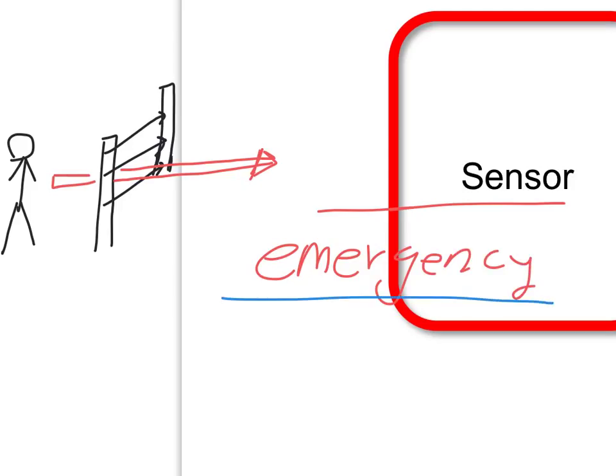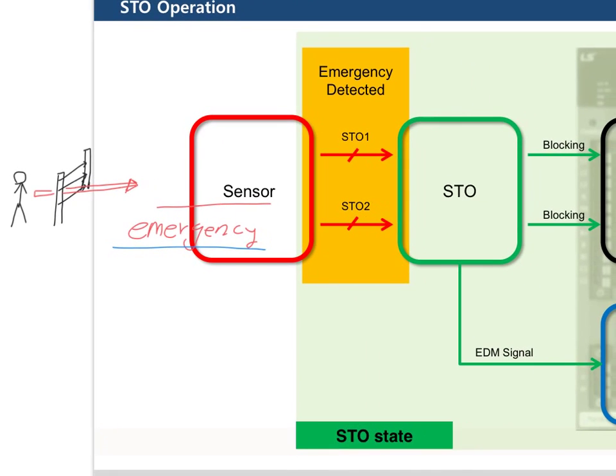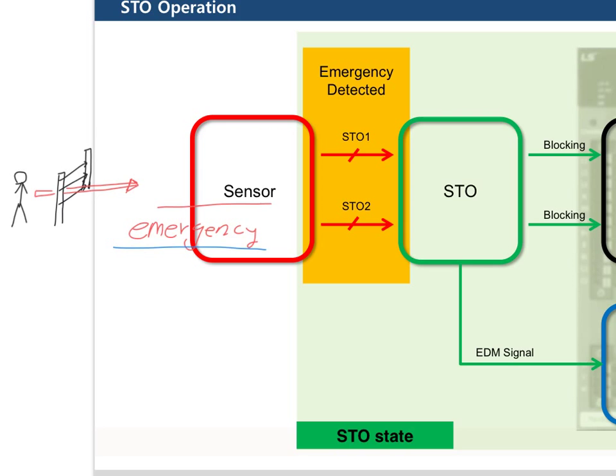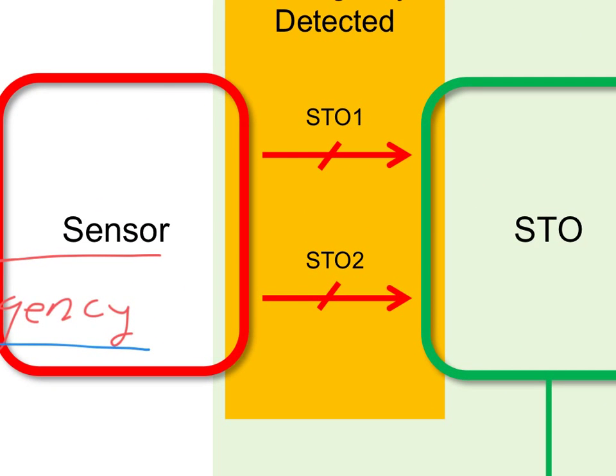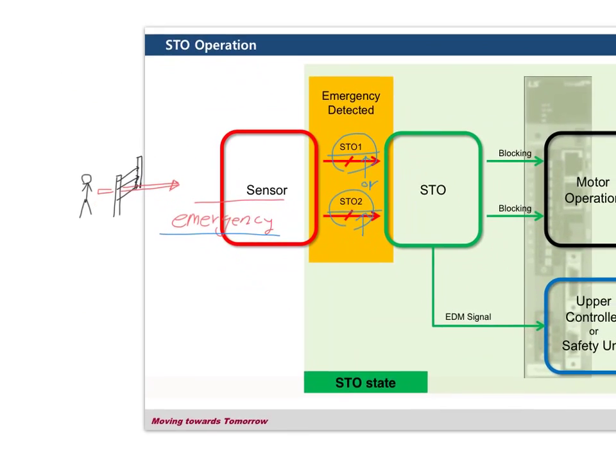And at this time, the STO is turned off. For example, STO1 is turned off or STO2 is turned off. It depends on which STO is turned off. But sometimes STO1 and STO2, both of them are turned off. But it is not really important. One thing that is very important is that if one of STO is turned off, STO1 or STO2, if one of them is turned off, the drive state is changed to STO.